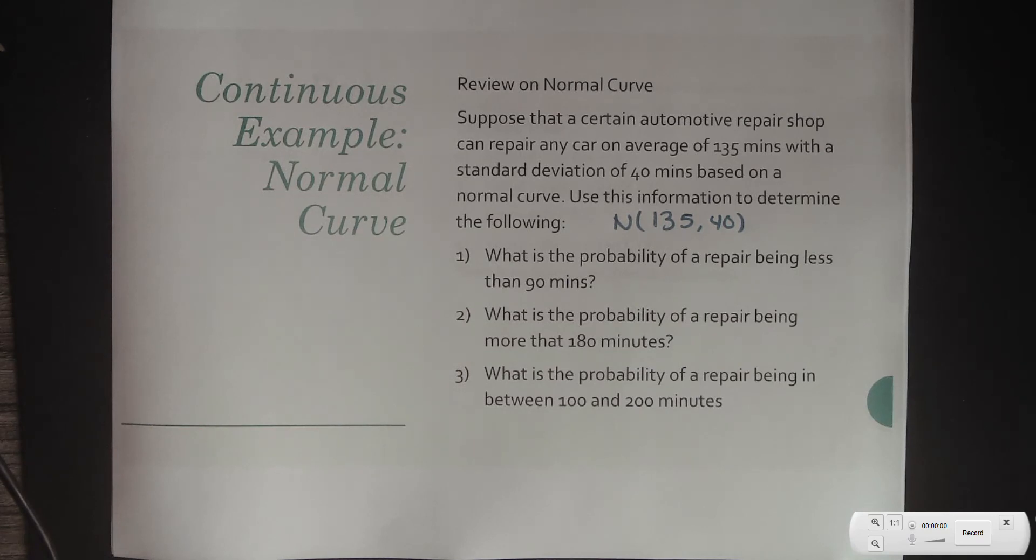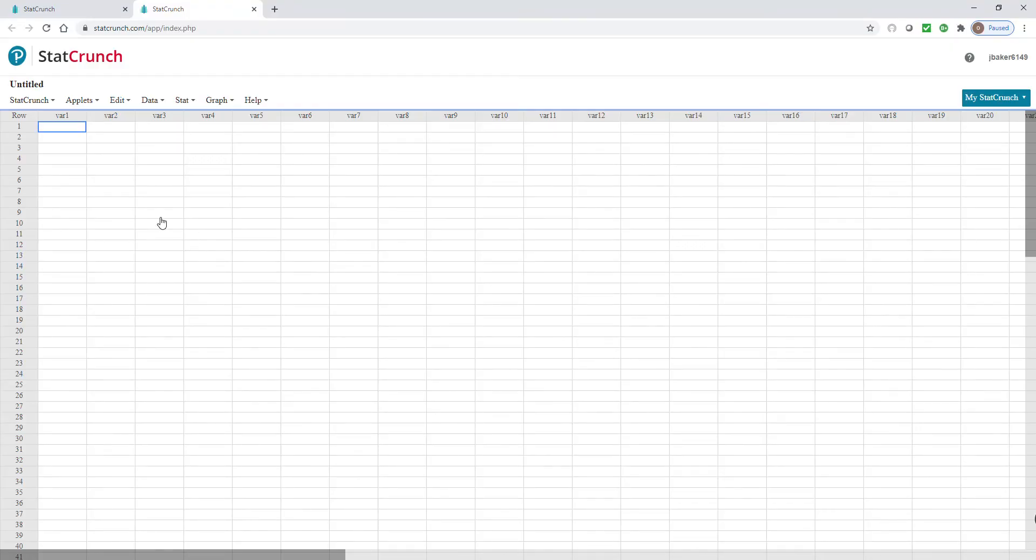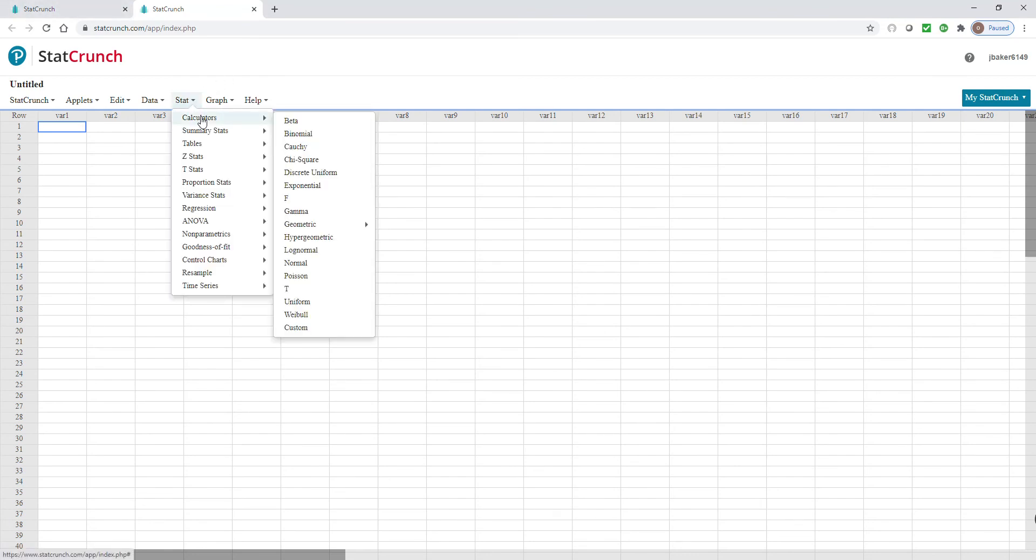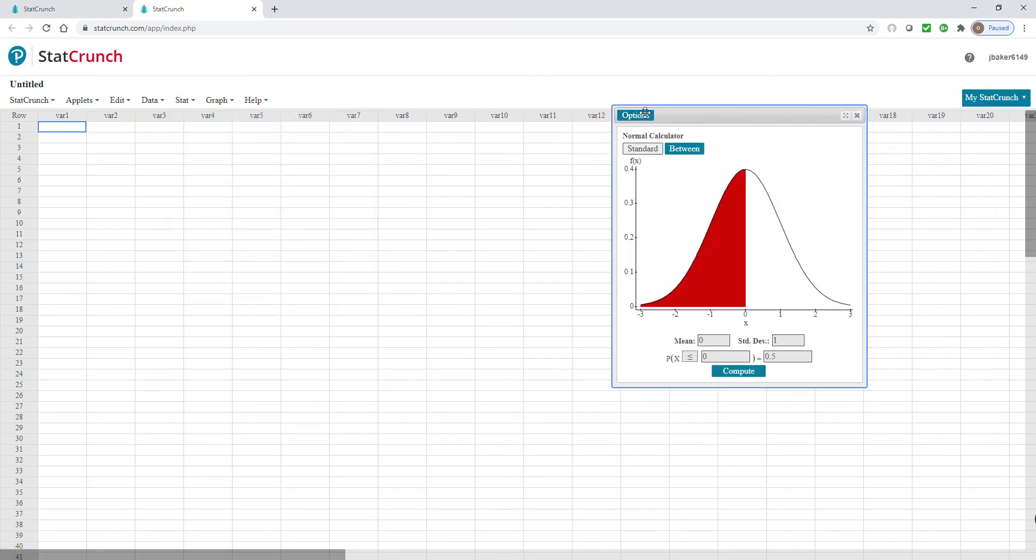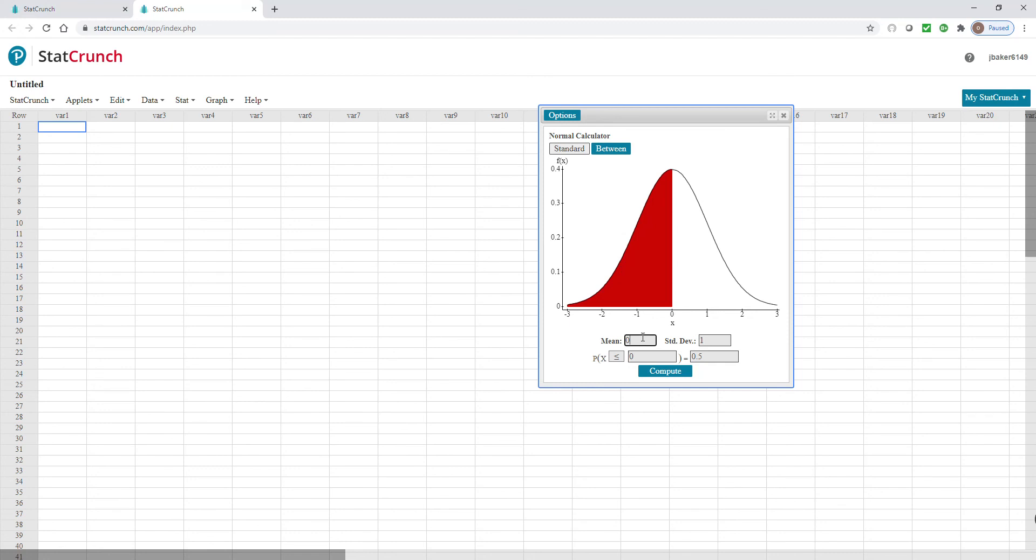What I'm going to do is, again, I'm going to use my StatCrunch as a review. If I pull up StatCrunch, I'm going to go to Stat, Calculators, and then go to Normal. And if I go in here, my mean is 135.